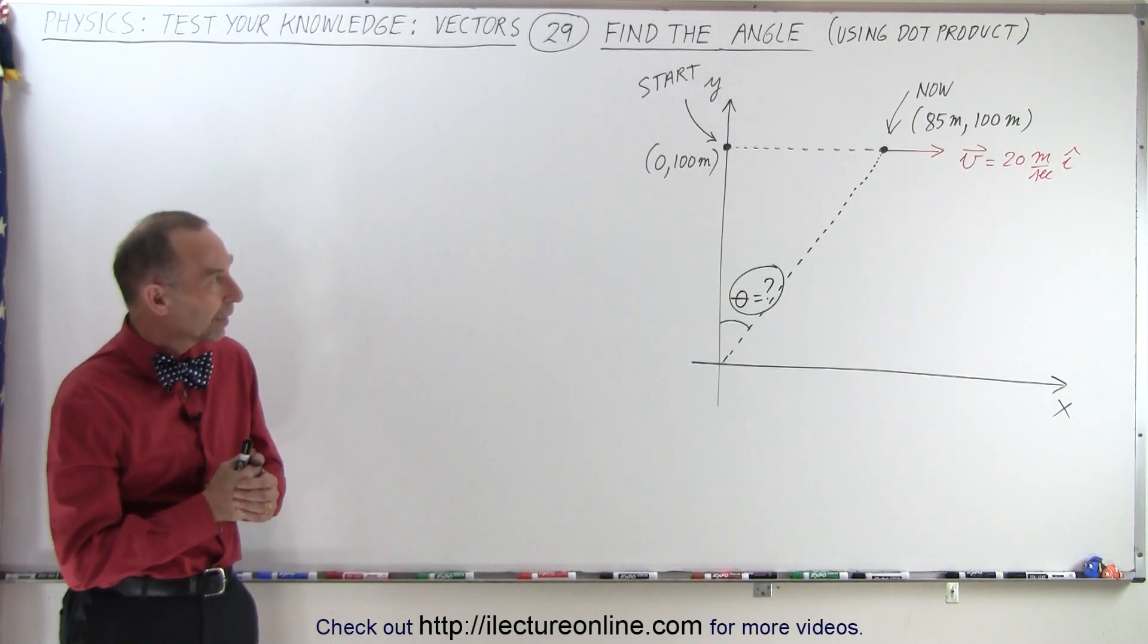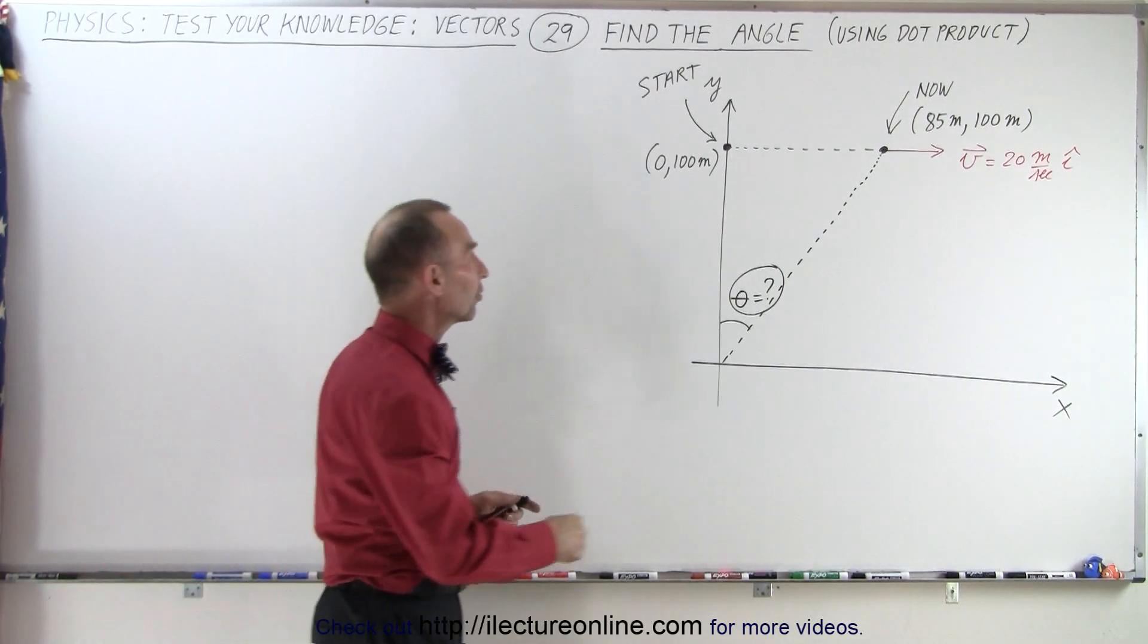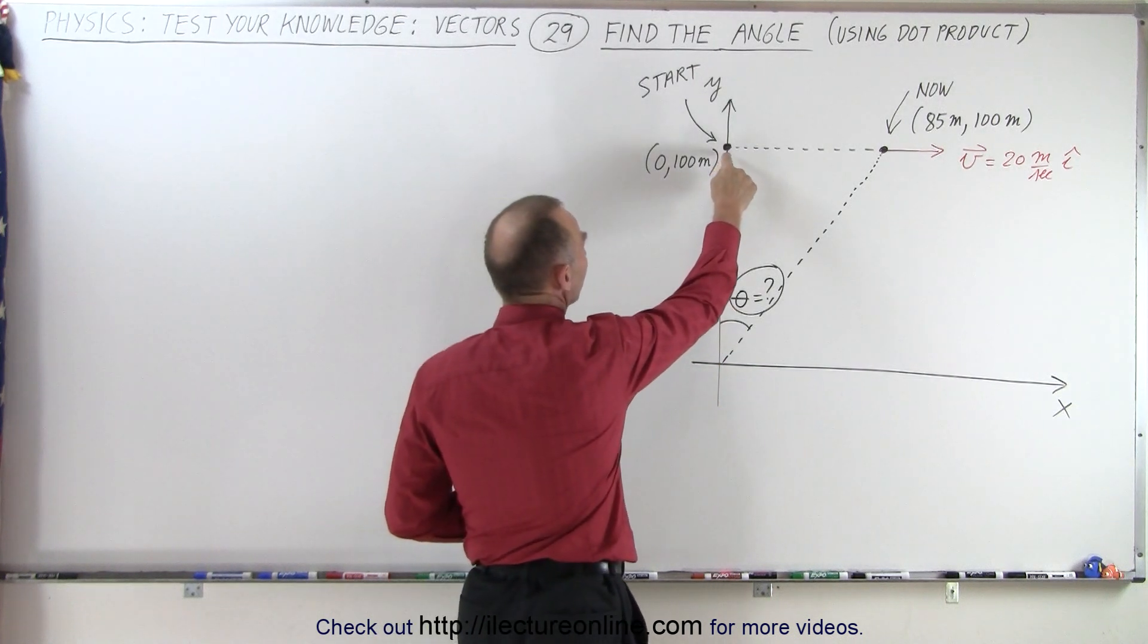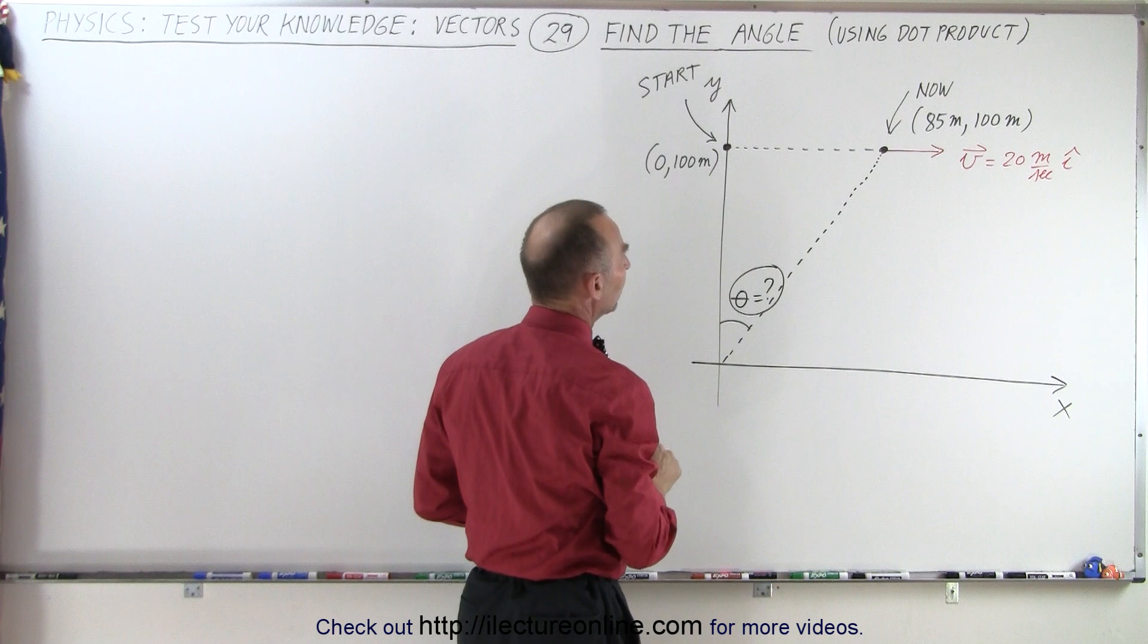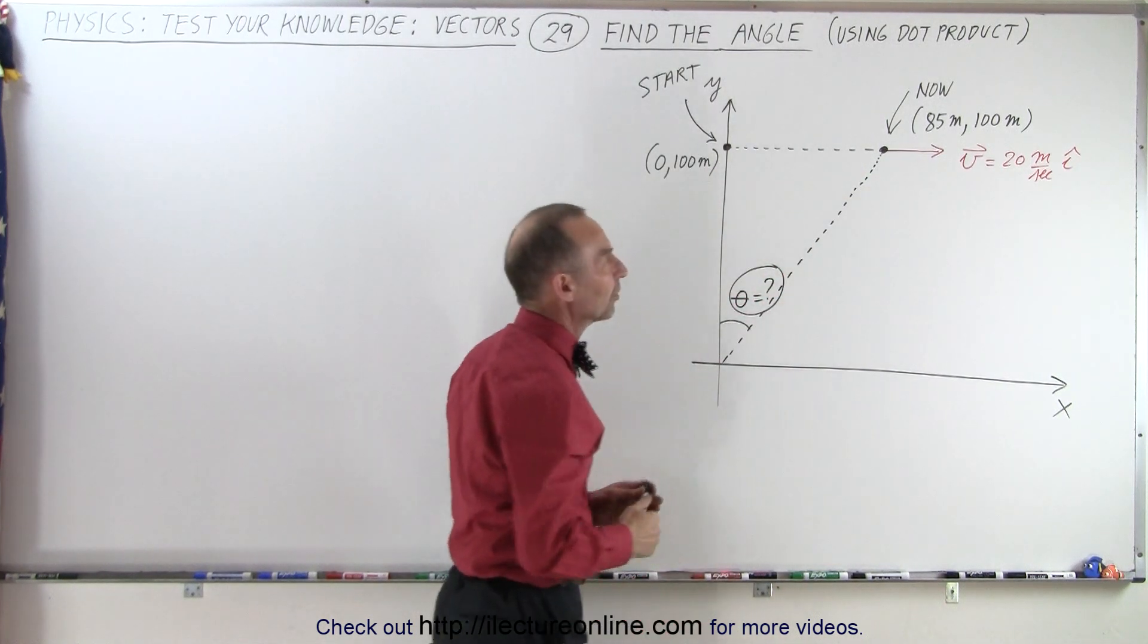Welcome to ElectronLine. Let's assume that we have a particle that started over here at a distance where x equals 0 and y equals 100 meters above the origin, and it's moving to the right at 20 meters per second.